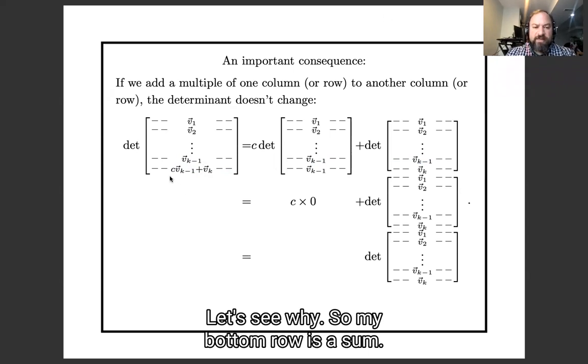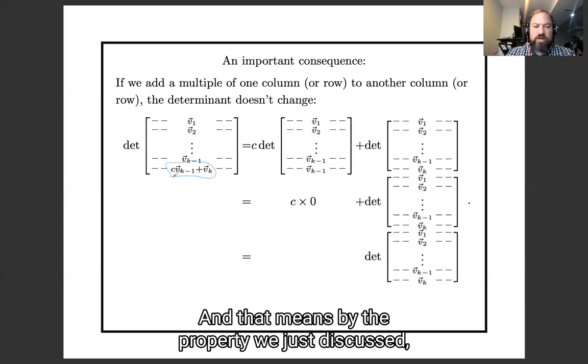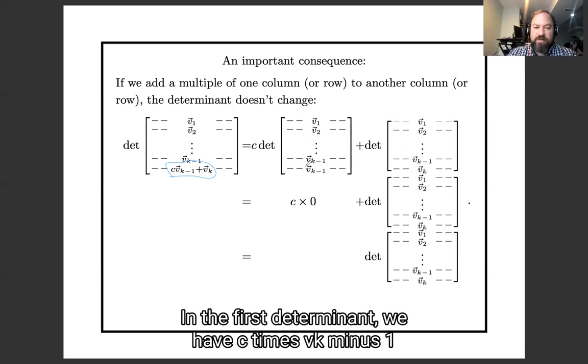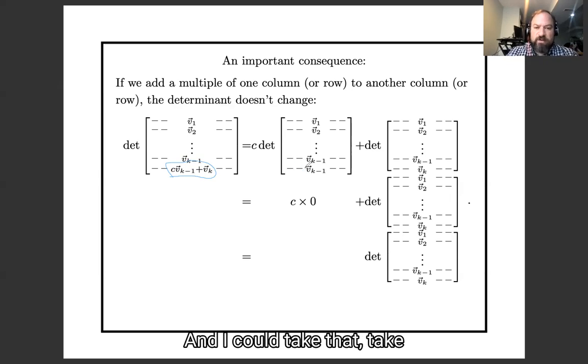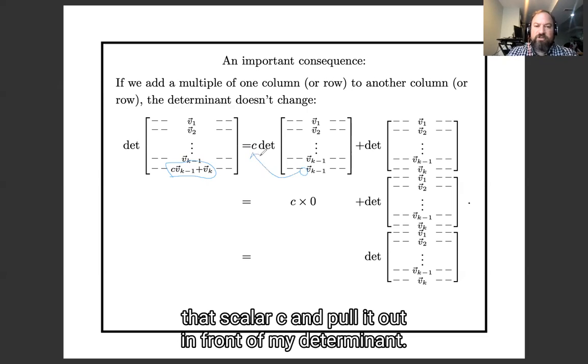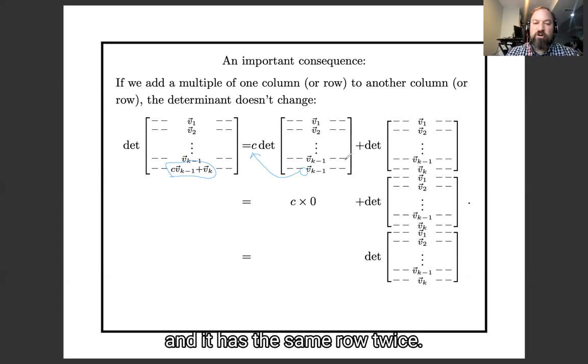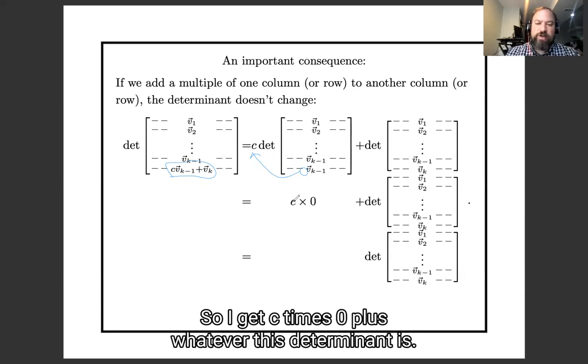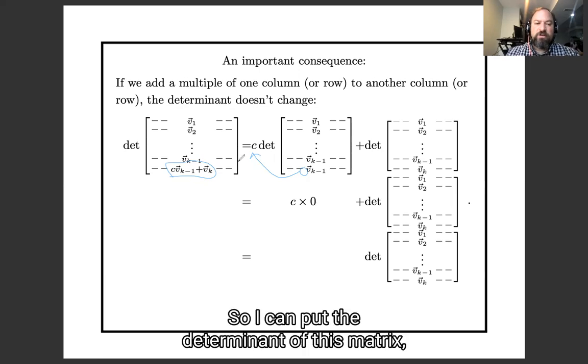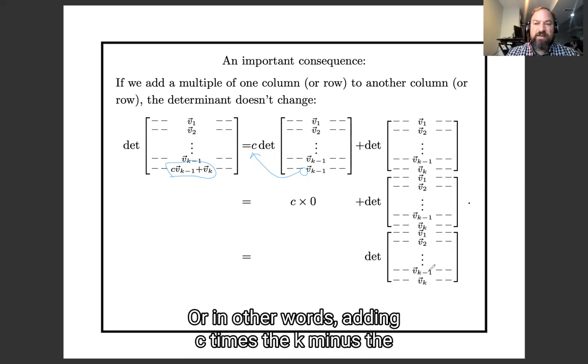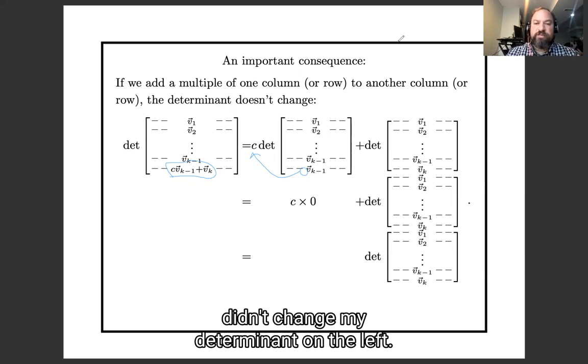So my bottom row is a sum, and that means by the property we just discussed, we can write this determinant as a sum of two determinants. In the second determinant we have vk, in the first determinant we have c times vk minus one, and I can take that scalar c and pull it out in front of my determinant. And then this matrix has a repeated row, it has the same row twice, so its determinant is going to be zero. So I get c times zero, plus whatever this determinant is, and anything times zero is zero. So I get the determinant of this matrix, is the determinant of this matrix. In other words, adding c times the k minus first row to the kth row didn't change my determinant on the left.